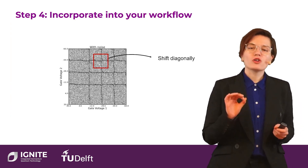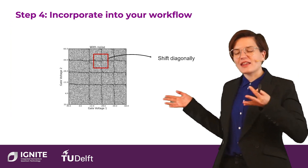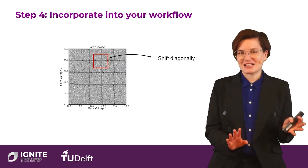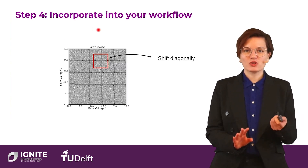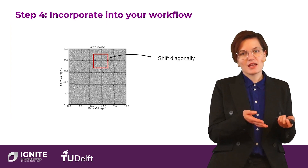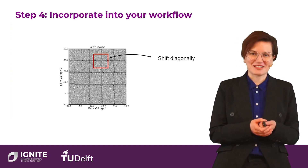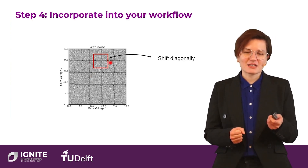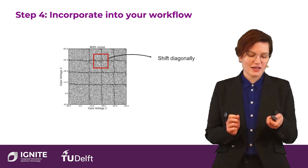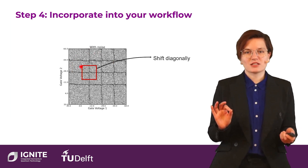The first thing you do is draw a new charge stability diagram — and this is the key thing: we want to build models that generalize to new data, so testing on a diagram from the training set is not smart. In an experiment, this would mean making a new experimental configuration or device; in simulation, you just draw new random numbers for the parameters. Then we pick a red square window to measure. The neural network takes this red square, classifies it, and if both lines are detected, tells us to shift diagonally — so we shift diagonally and measure the next red square.